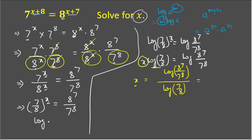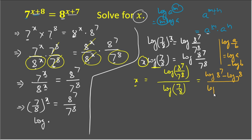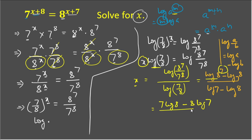Using the rule log(a/b) = log a minus log b, we expand the numerator: log(8^7) minus log(7^8), which becomes 7·log 8 minus 8·log 7. The denominator log(7/8) expands to log 7 minus log 8. So x equals (7·log 8 − 8·log 7) divided by (log 7 − log 8).